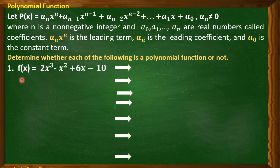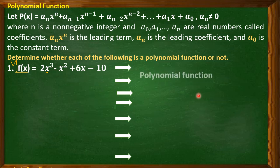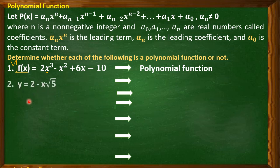Number one: f(x) = 2x³ - x² + 6x - 10. The value of f(x) depends on the value of x — this is the dependent variable, and x is the independent variable. Checking the exponents: all exponents are positive integers. Therefore, example number one is a polynomial function.